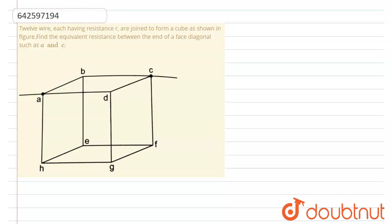In this problem, we have 12 wires, each with resistance r. We have to find the equivalent resistance across AC.